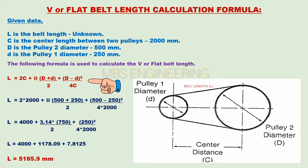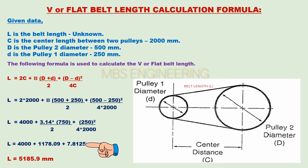The belt length L equals 2C plus pi multiplied by (capital D plus small d), divided by 2, plus the whole square of (capital D minus small d), divided by 4C. Applying the given data: L equals 2 multiplied by 2000, plus pi multiplied by (500 plus 250), divided by 2, plus the whole square of (500 minus 250), divided by 4 into 2000. Please refer to the step-by-step calculation based on the given data.